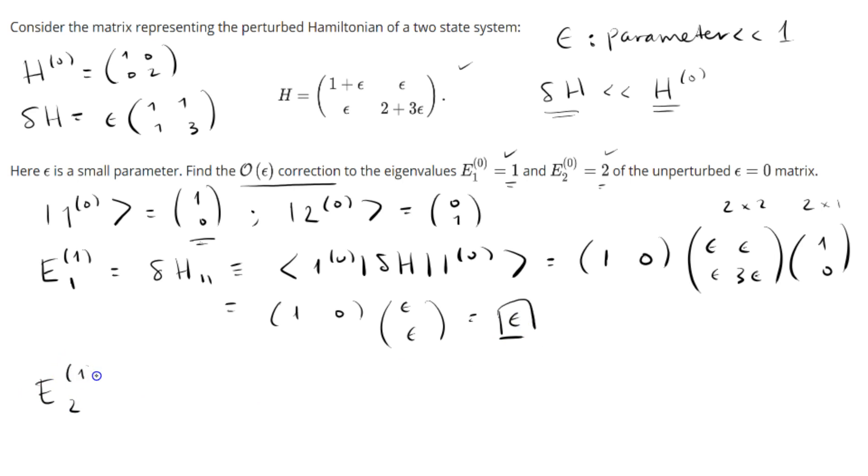Similarly, E2^(1), the first-order correction to the second energy state, is ⟨2|δH|2⟩, which equals ⟨2, 0|δH|2, 0⟩. Let's write it out. The bra ⟨2, 0| is now (0, 1) as a row vector. I'll pull out the epsilon. We have (1, 1; 1, 3) times (0; 1).